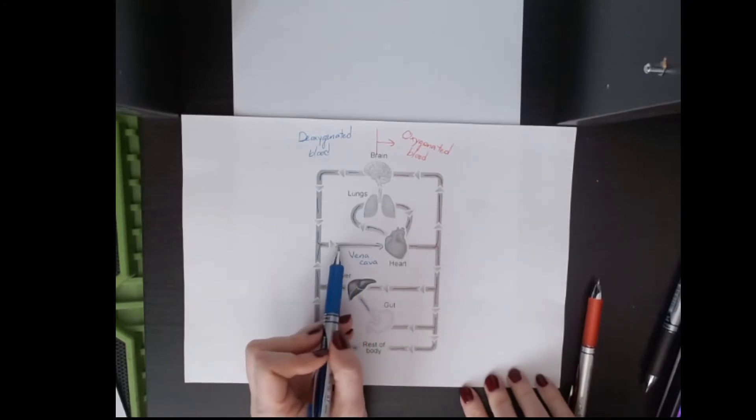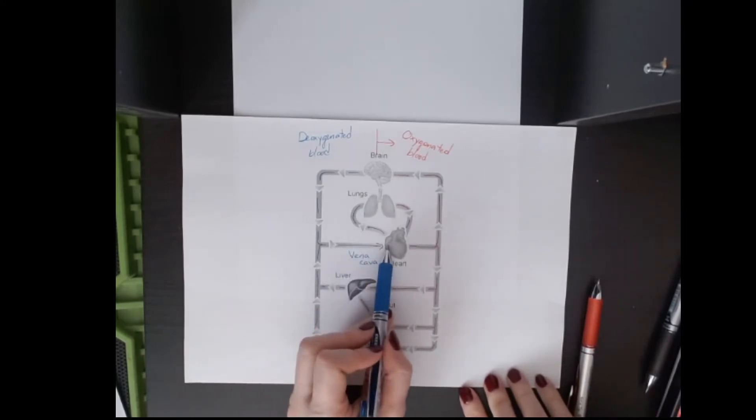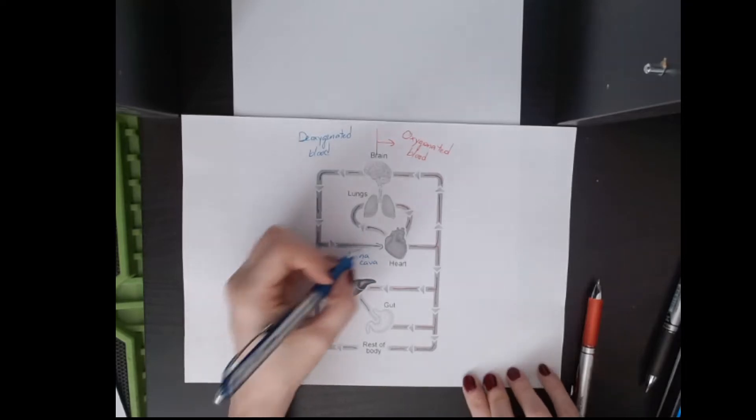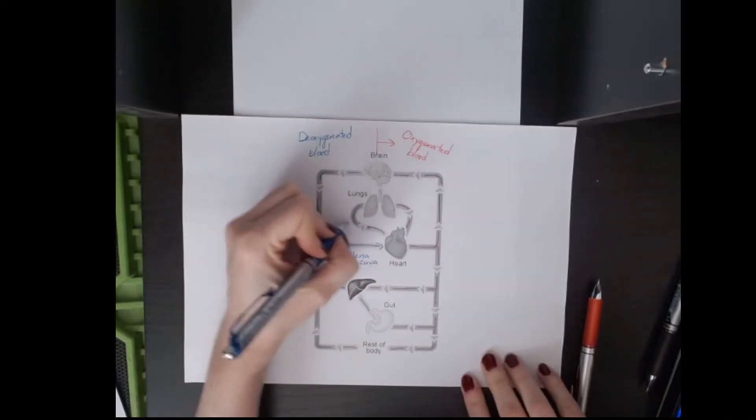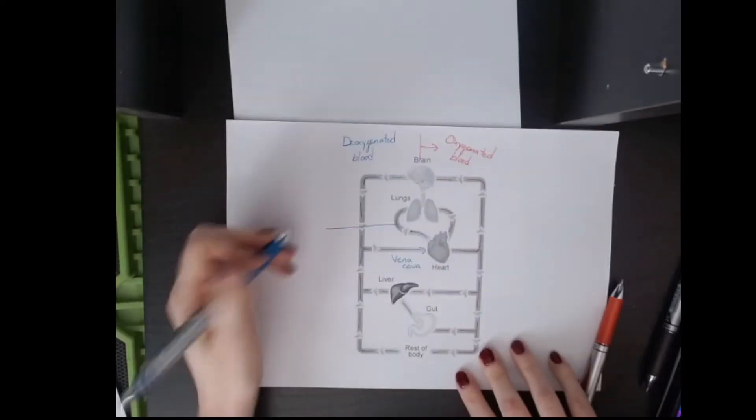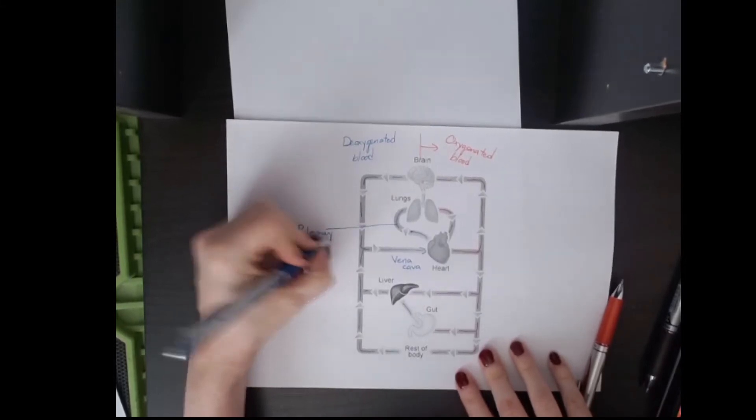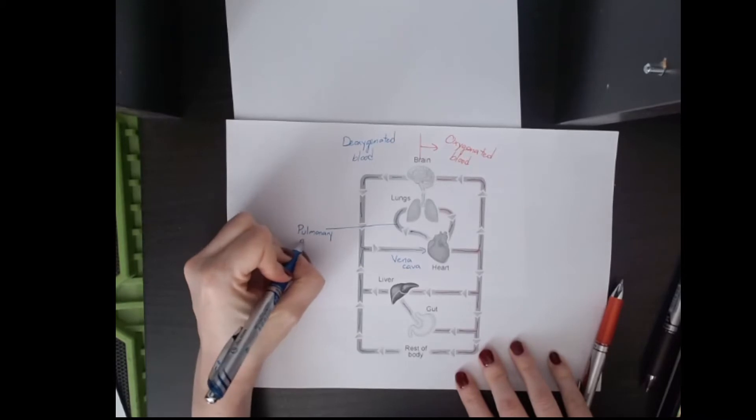The idea is that you get deoxygenated blood carrying a lot of waste products coming into the heart. It enters the right atrium, then goes to the right ventricle, and then it gets pumped out towards the lungs. And so this one, where it's going toward the lungs, this is the pulmonary artery. So pulmonary basically means anything to do with the lungs.